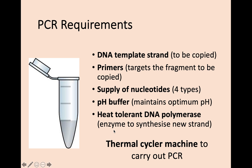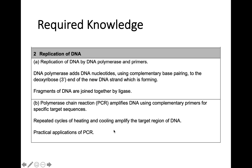The requirements of PCR are similar to those of DNA replication, with some additions for the lab environment. You need your original DNA template strand, primers to target the fragment and begin the process, and a supply of all four types of DNA nucleotides. A pH buffer is added to maintain optimum pH throughout the process. You also need heat-tolerant DNA polymerase to synthesize the new strand, and the whole process takes place within a thermocycler. That covers replication of DNA — both standard replication and PCR — and we'll use this to move forward to Key Area 3.